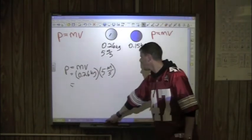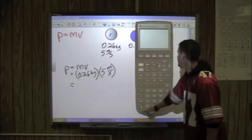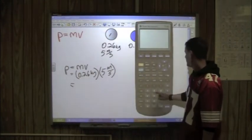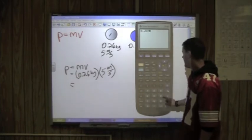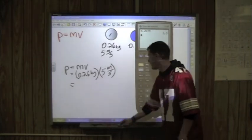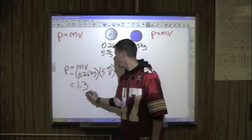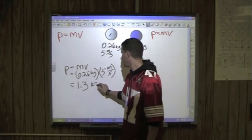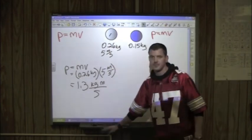And we get out of our calculator and we will say that 0.26 times 5 meters per second is 1.3. So we know that this goes at 1.3 kilogram meters per second.